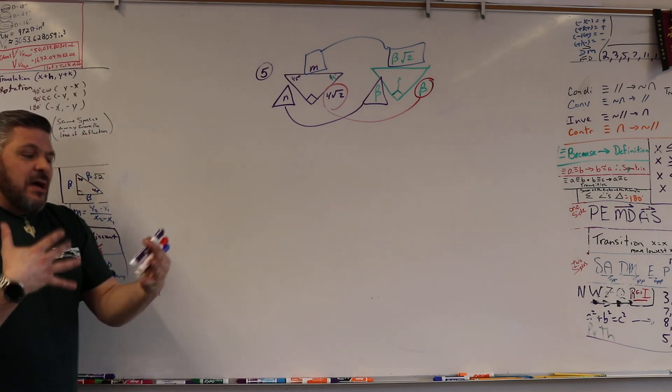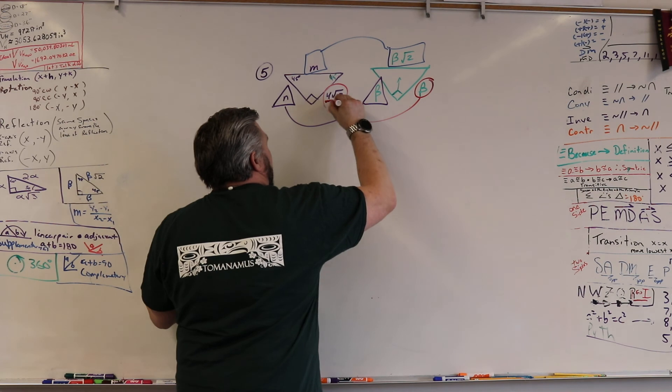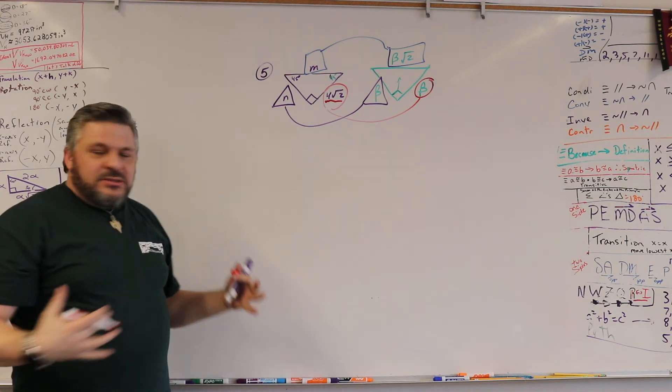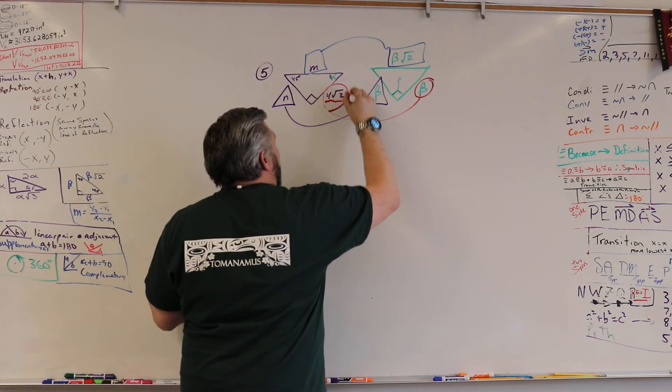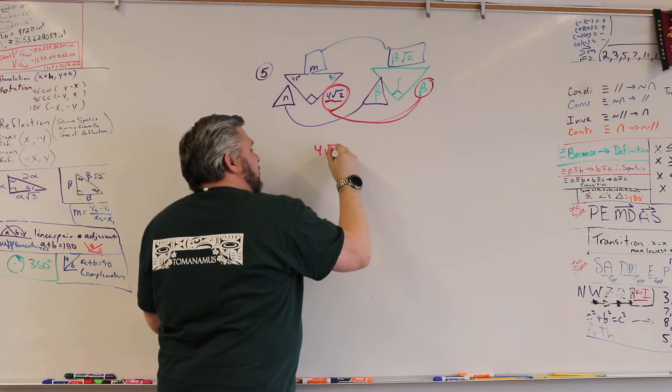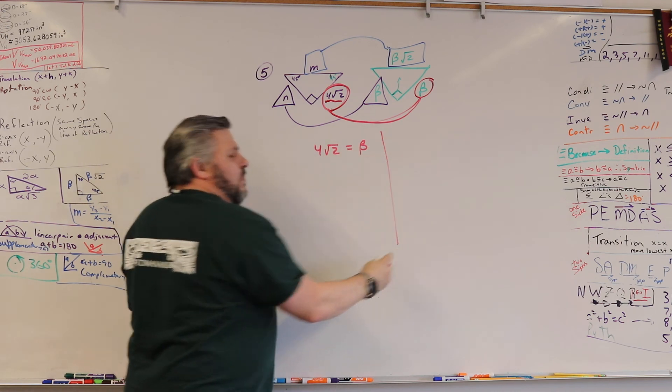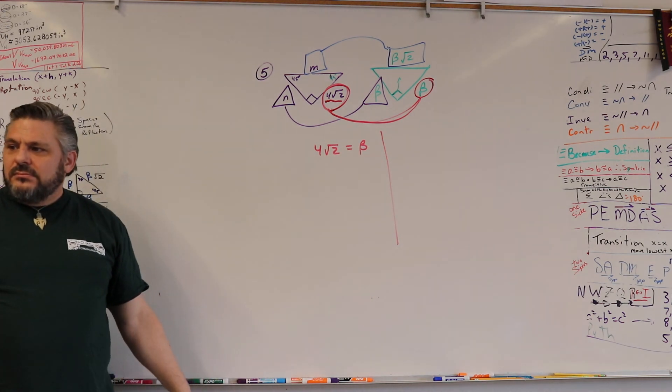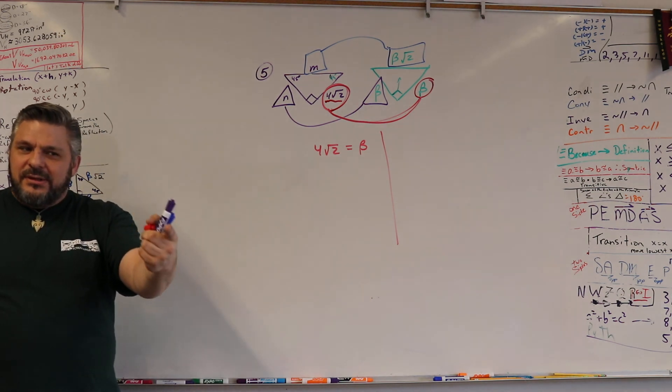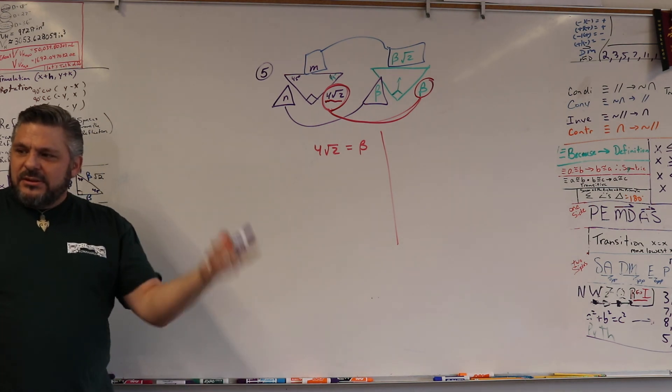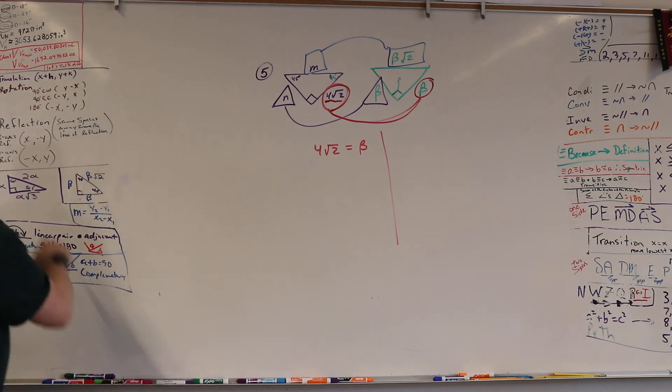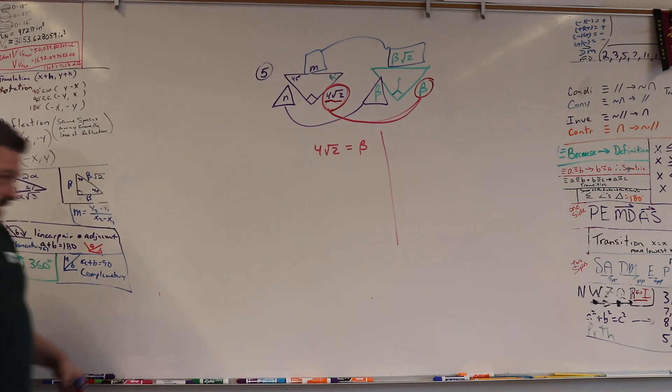All right, so I'm going to start with the number. You always start with the number. This is the only number over here. There's N, there's M, and there's 4 square root 2. So I'm going to start with that, and I know that this is equal to beta. So 4 square root 2 equals beta. Why? Is it given? Not given. It's a substitute? Not substitute. What kind of triangle is this?